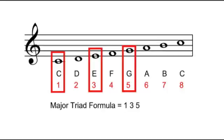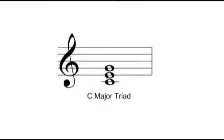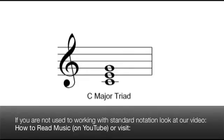From this we can derive a useful formula that will enable us to work out the notes of any other major chord. The major chord formula is simply expressed as 1, 3, 5. In standard notation, a major triad might look like this — the notes are piled up on top of each other, because by definition a chord is three or more notes heard simultaneously.